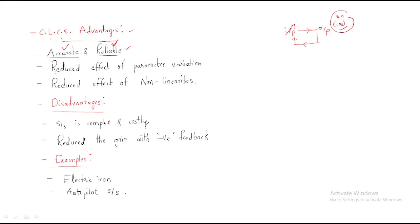Second advantage: reduced effect of parameter variation. If any parameter varies, it does not significantly affect the system. Third advantage: reduced effect of nonlinearities — any nonlinearity present will not affect the system, or its effect is reduced due to the closed-loop control system. These are the three main advantages of the closed-loop control system.